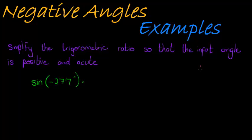Of course, our aim is to make this angle into a positive and acute angle. Acute meaning less than 90 degrees, positive meaning greater than zero. So we want a function of sine with an angle inside that's between zero and 90 degrees.